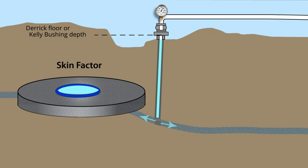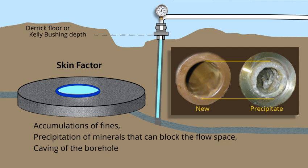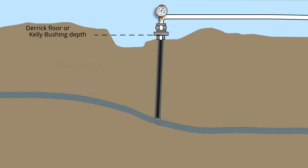Several things can affect the pore space near the well bore, including the accumulation of fines, the precipitation of minerals that can block the flow space, and the caving of the bore hole, which creates either a larger space or fills up the hole with debris. Additionally, the rock may be fractured near the well bore, either from drilling and completion operations or the natural rock character. Reservoir engineers use calculations to quantify these effects in a parameter called a skin factor.